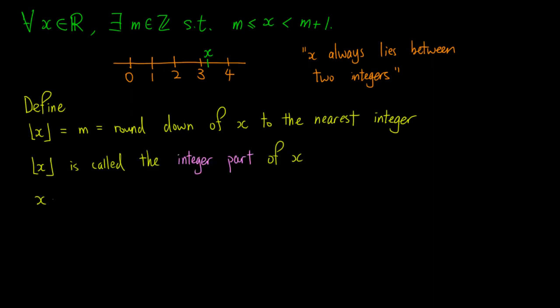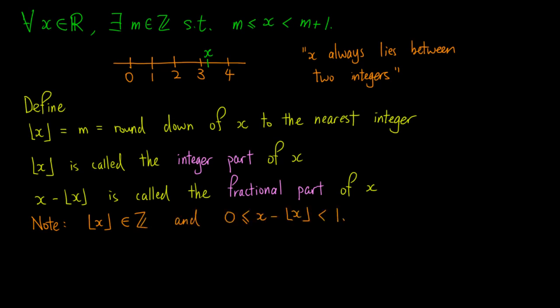Floor of x is called the integer part of x. Subtracting the integer part of x from x, we have the fractional part of x. Note that by definition, the floor of x is an integer, and the fractional part of x is greater than or equal to 0 and less than 1.